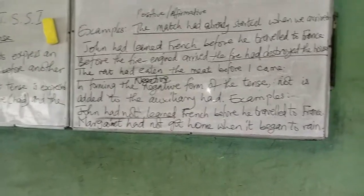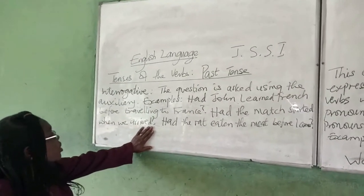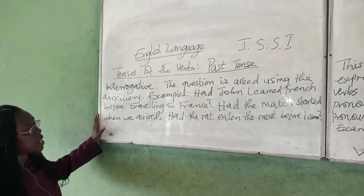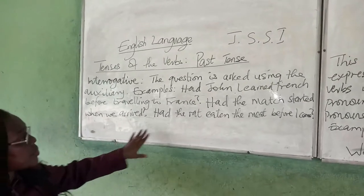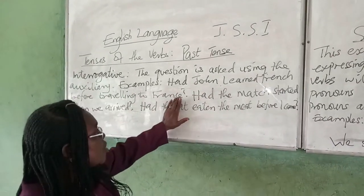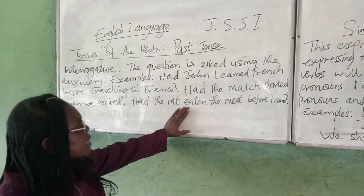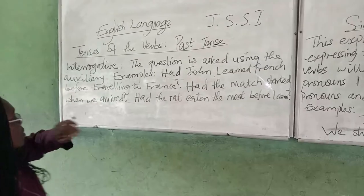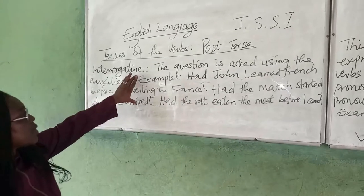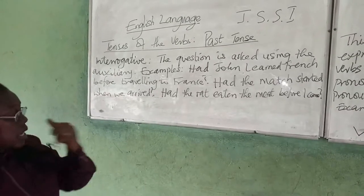The next one is the interrogative form. For the interrogative form of the past perfect tense, we begin with the auxiliary. So we have: 'Had John learned French before traveling to France?' 'Had the match started when we arrived?' 'Had the rat eaten before it came?' These are questions in the interrogative form for the past perfect tense. With this we end the past tense.